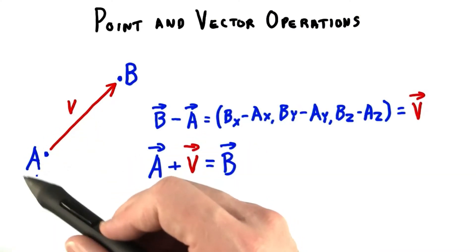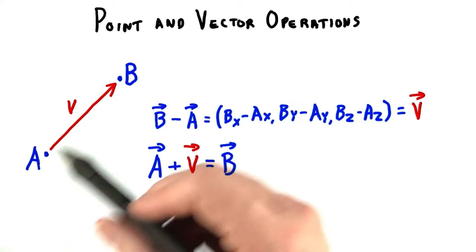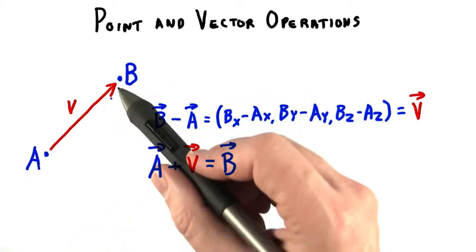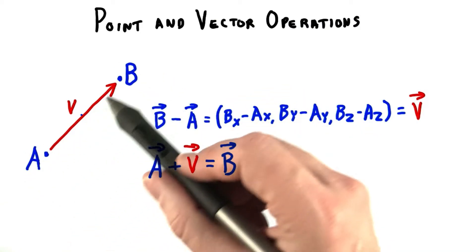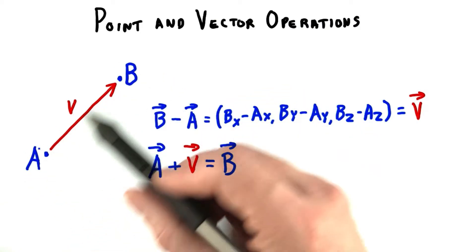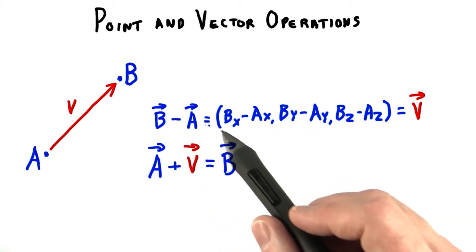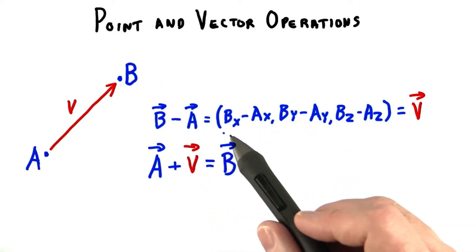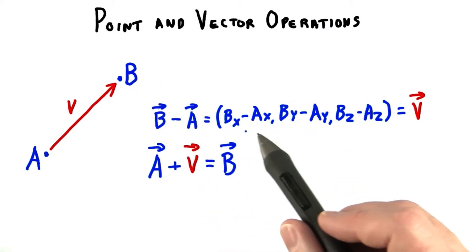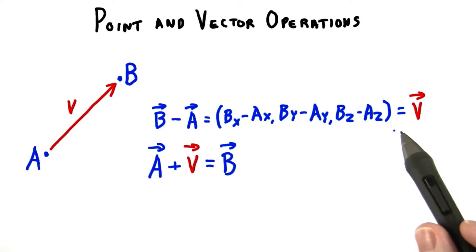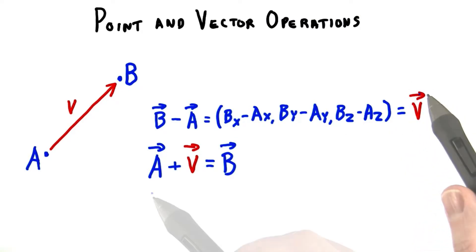To start with, if you subtract the location of point A from point B, you get a vector describing how to get from point A to B. So B minus A is calculated by taking the coordinates and subtracting them from one another, and this gives you vector V.